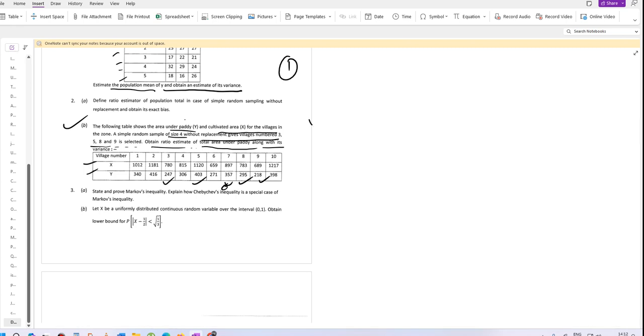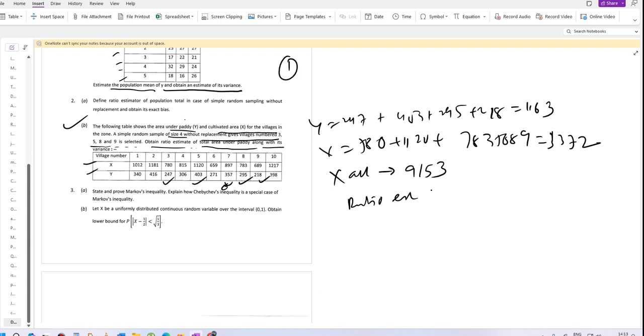The Y values in the sample are 247 plus 403 plus 295 plus 218, which equals 1163. The X values are 780 plus 1120 plus 783 plus 689, which equals 3372. The X values of all villages sum to 9153. The ratio estimate of total Y is 1163 divided by 3372 times 9153, which equals 3182.926.